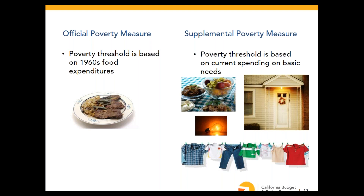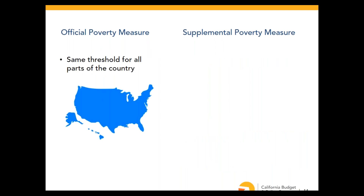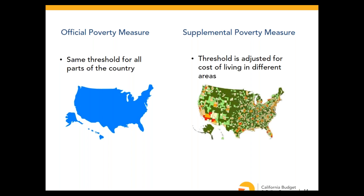A second major shortcoming of the official measure is that poverty thresholds are not adjusted for the cost of living in different areas — there's just one threshold for each family type across the entire U.S. For example, a mother with two kids was considered poor if her income was below about $19,700 in 2017, whether she lived in high-cost San Francisco or low-cost rural Mississippi. The supplemental thresholds, on the other hand, are adjusted to account for differences in local housing costs.